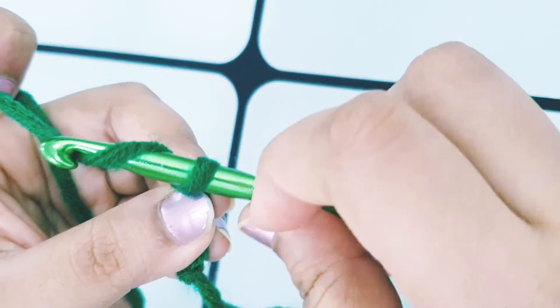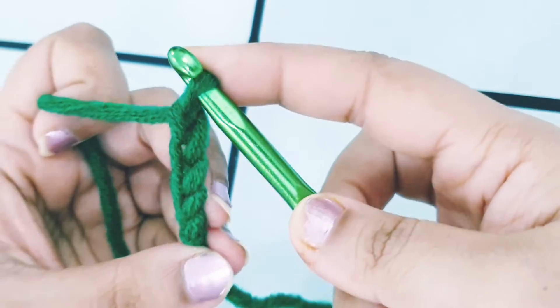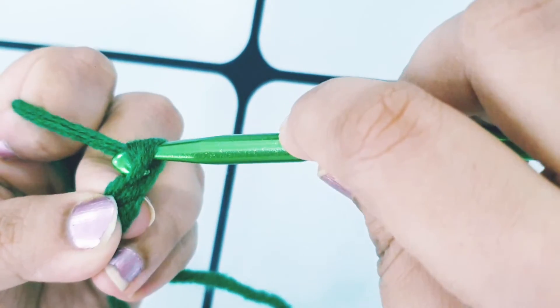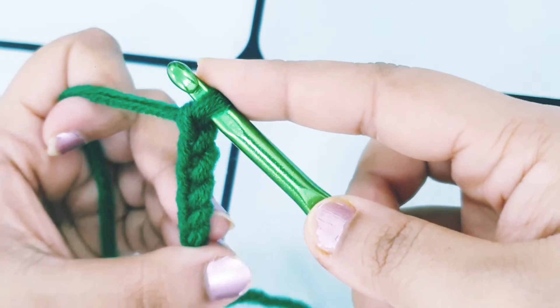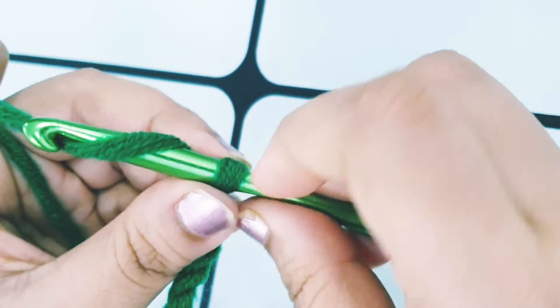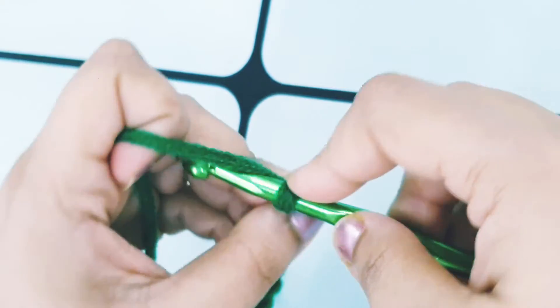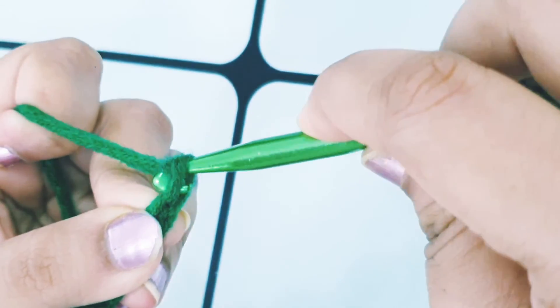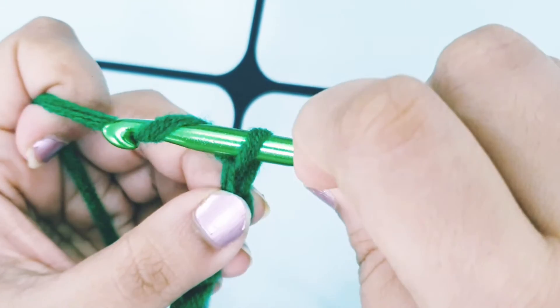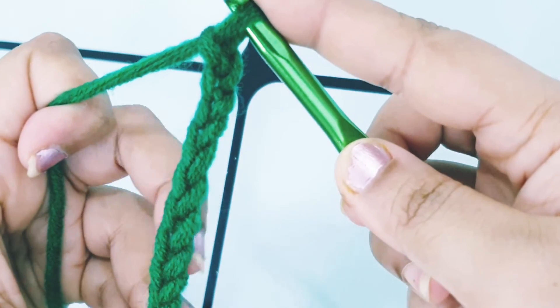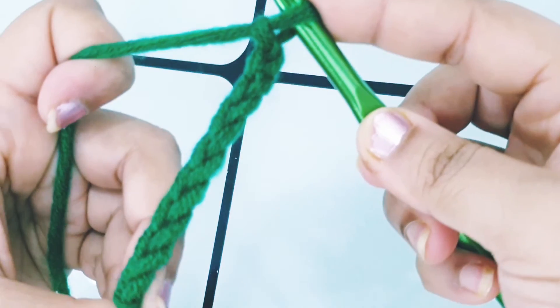Yarn over, pull through the loop on your hook. So that's the pattern: yarn over, pull through the loop on your hook. Yarn over, pull through the loop on your hook.